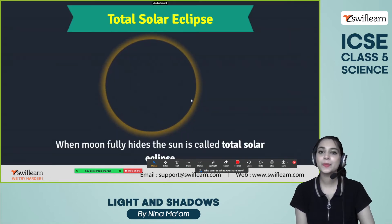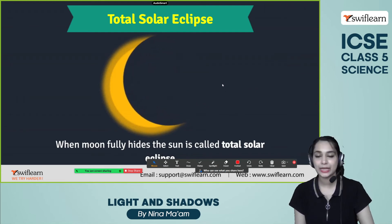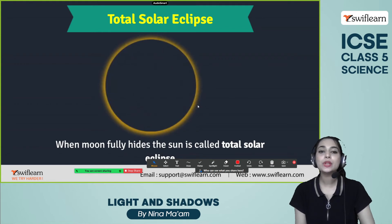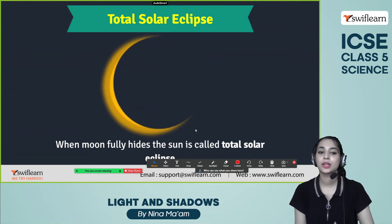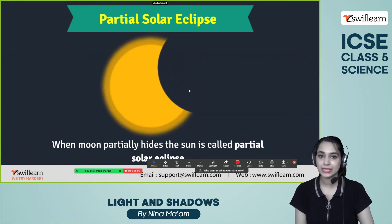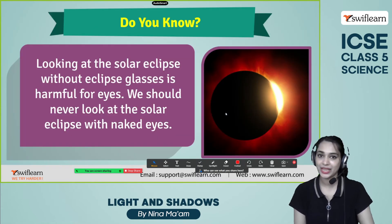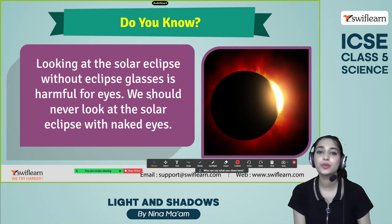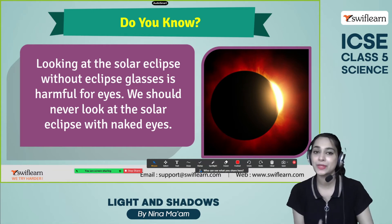We also have the total solar eclipse, which means the sun is fully covered by the moon — when the moon fully hides the sun, it is called a total solar eclipse. When the moon only partially covers the sun, it is known as a partial solar eclipse. Looking at the solar eclipse without eclipse glasses is harmful for your eyes, so we should never look at the solar eclipse with naked eyes. In 2017, a solar eclipse recently took place.